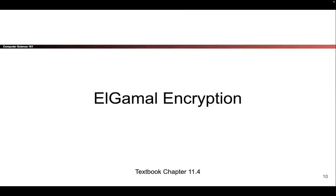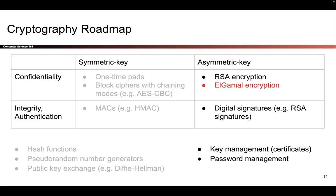The first public key encryption scheme we will see today is called El Gamal Encryption. In the cryptography roadmap, it is in the top right box because it provides confidentiality and it uses the asymmetric key model.